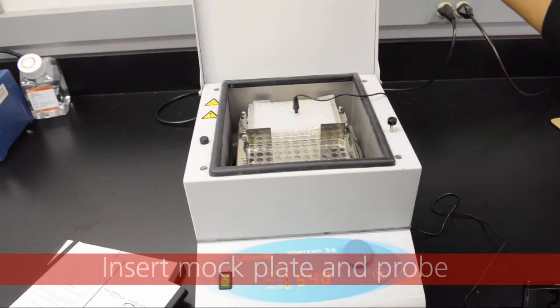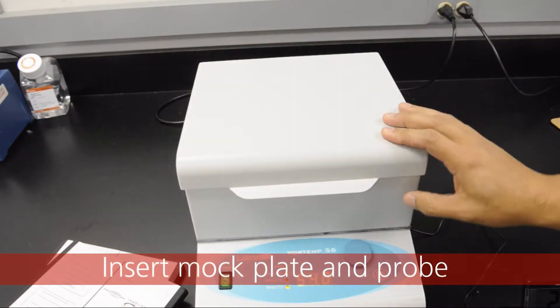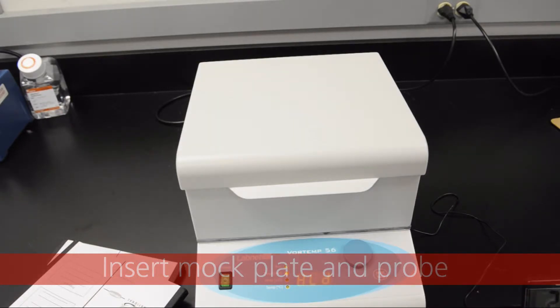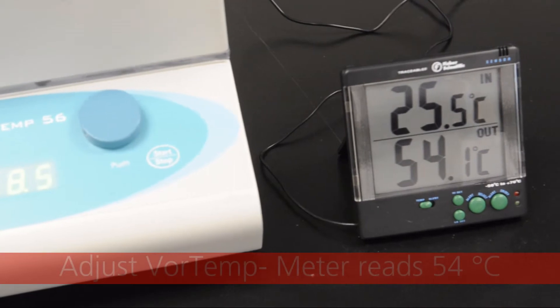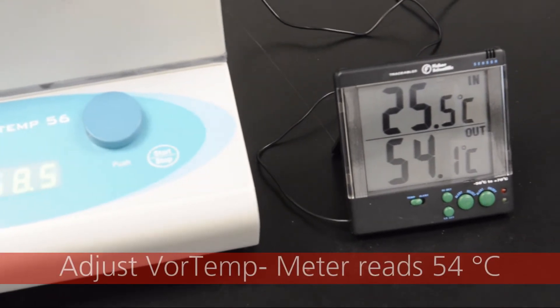Insert the mock hybridization plate with the temperature probe located in well D7. After the temperature on the out display of the digital temperature meter has stabilized,